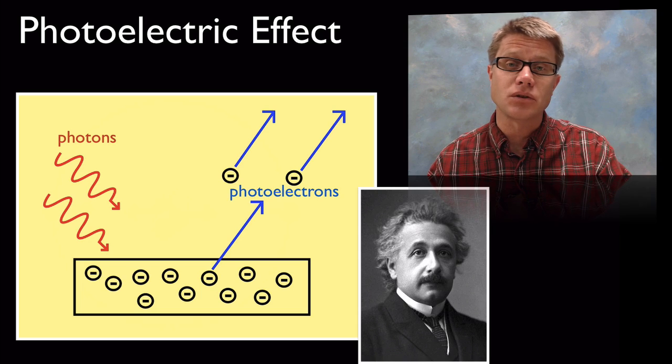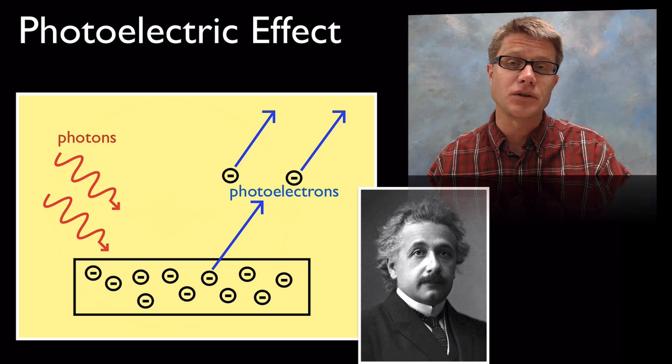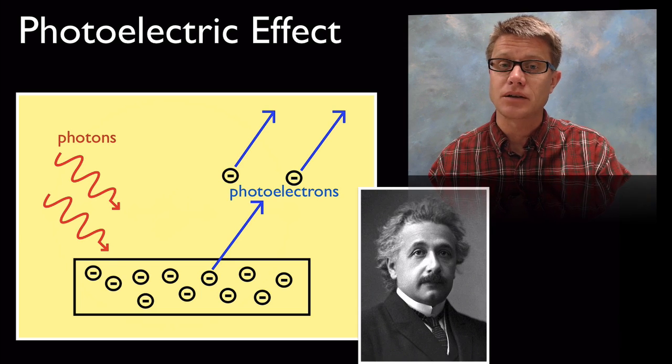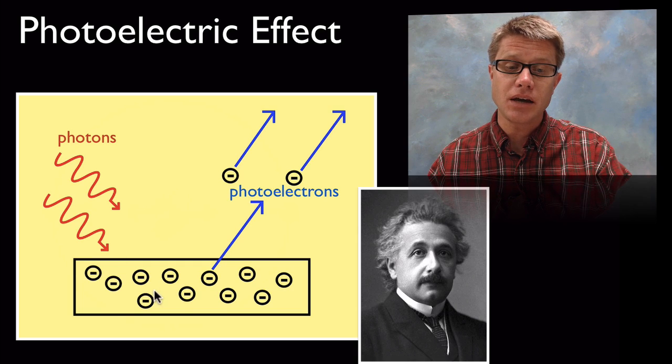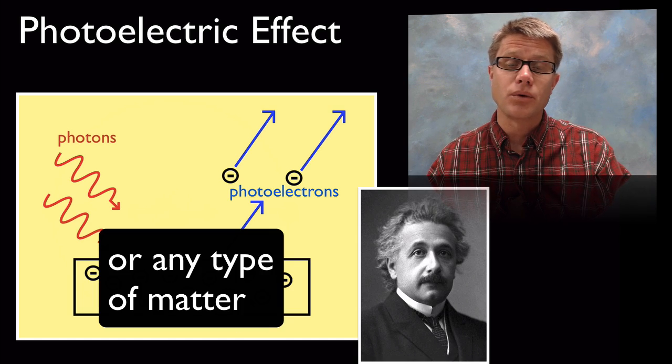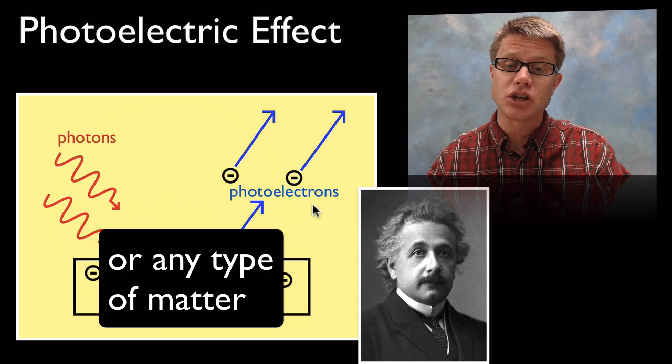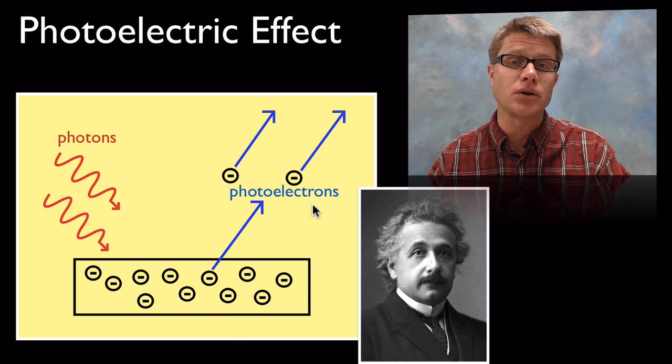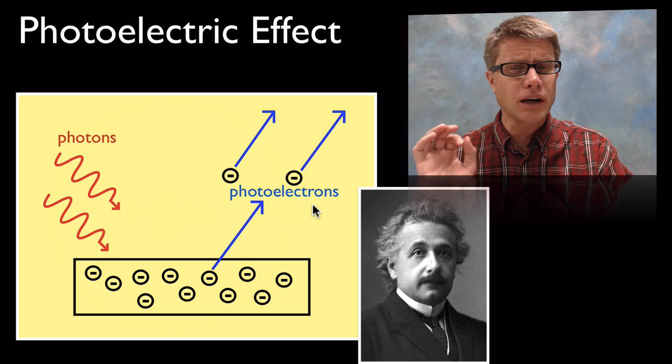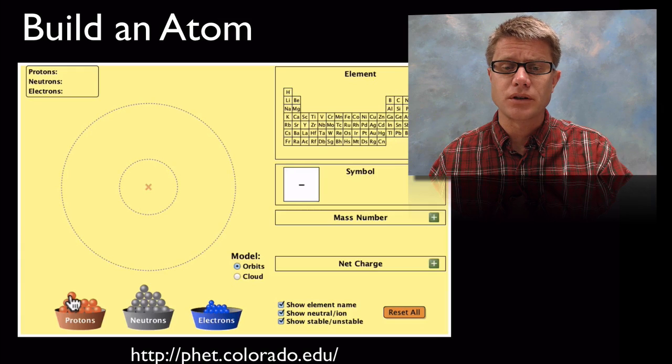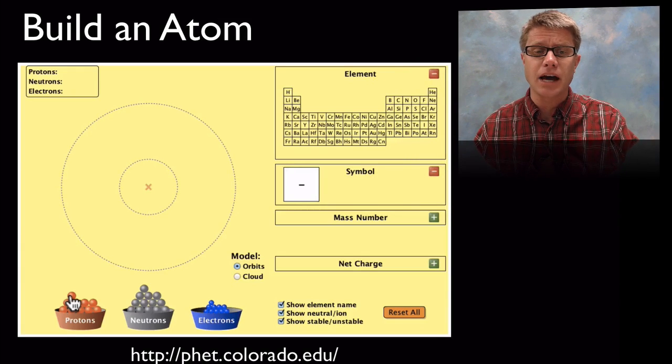And so that Nobel Prize was awarded to Albert Einstein for his discovery of the photoelectric effect. And what that means is if you hit metal with photons or hit metal with light, what it will do is it will eject these electrons. And we call those photoelectrons. And so hold on to that idea. It's going to become really important in just a second. But let's build an atom for a second.